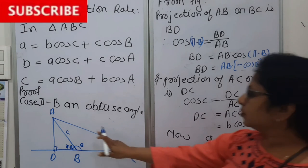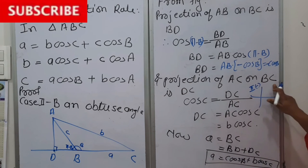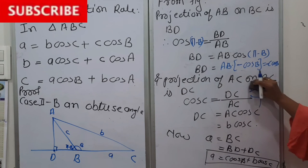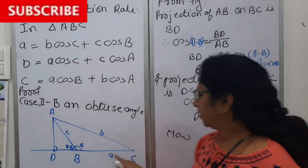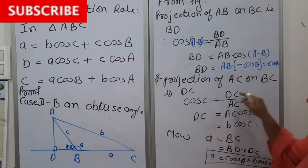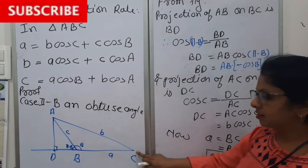Now the projection of AC we want. Projection of AC on BC is again DC. So in this triangle we are working with ADC.